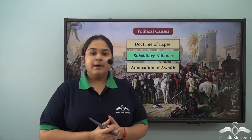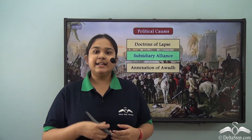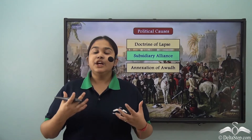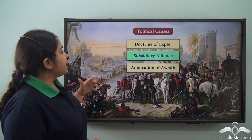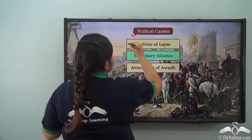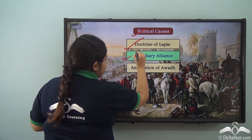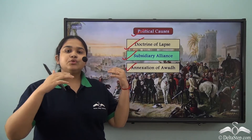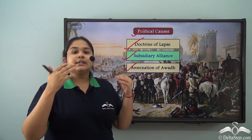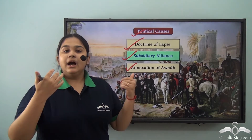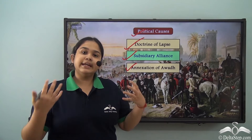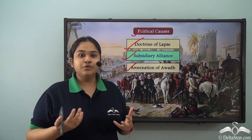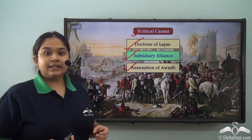Till now we have discussed the political causes that led to the great revolt of 1857. We have seen the political causes of the doctrine of lapse, the subsidiary alliance, and the annexation of Awadh, that angered not only the people but also the kings whose kingdoms came under British rule due to these political causes.